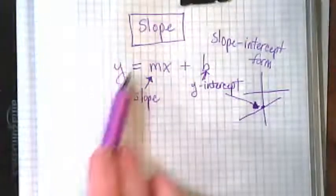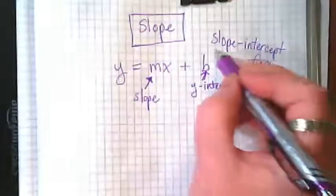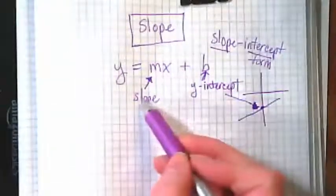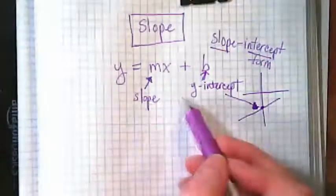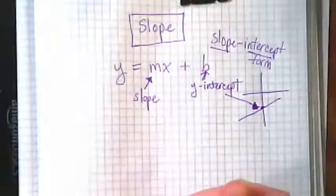And that's why this equation, y equals mx plus b, is known as slope-intercept, because it has m as the slope and b as our y-intercept.